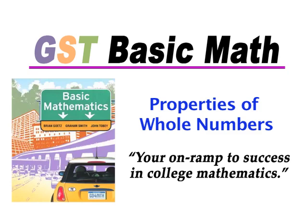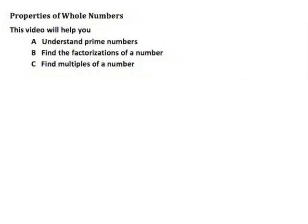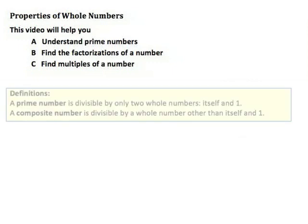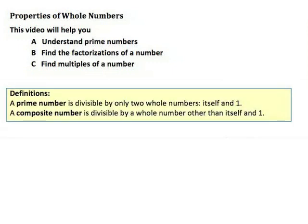Properties of Whole Numbers. This video will help you understand prime numbers, find the factorizations of a number, and find multiples of a number. Let's start by taking a look at some definitions. A prime number is divisible by only two whole numbers: itself and one. A composite number is divisible by a whole number other than itself and one.